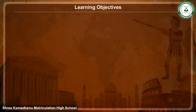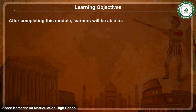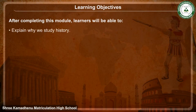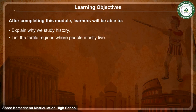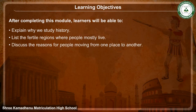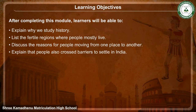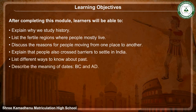Learning Objectives: After completing this module, learners will be able to explain why we study history, list the fertile regions where people mostly live, discuss the reasons for people moving from one place to another, explain that people also crossed barriers to settle in India, list different ways to know about the past, and describe the meaning of dates BC and AD.